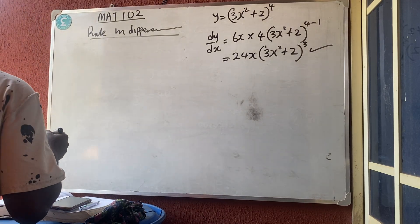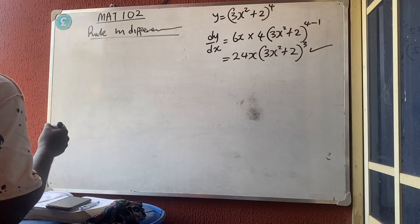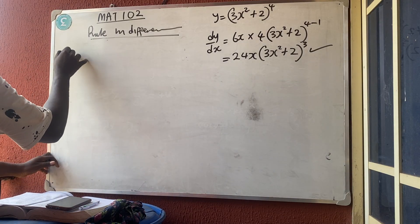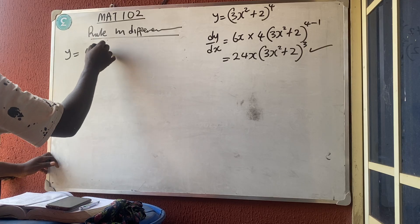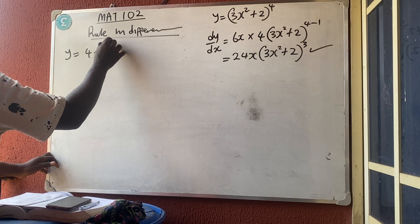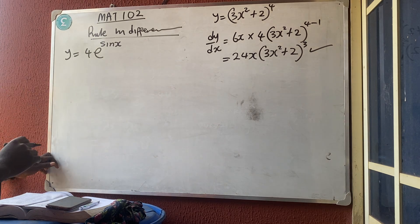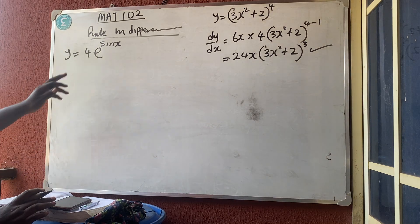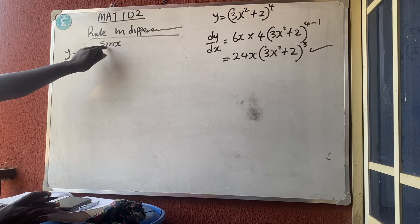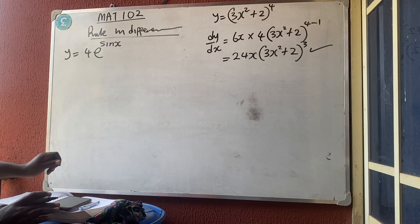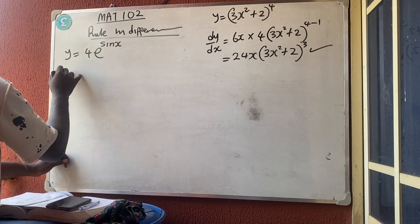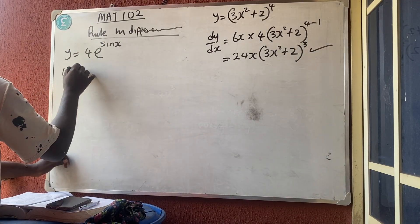Next, let's look at the chain rule applied to exponentials. If y = 4e^(sin x), the exponent is no longer just x — it's sin x. Anything on top that is not simply x should be treated as the bracket and set as u. So let u = sin x.